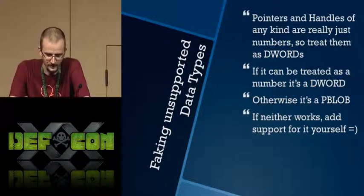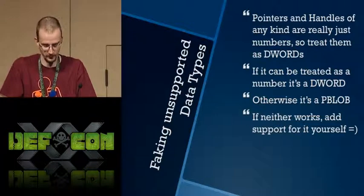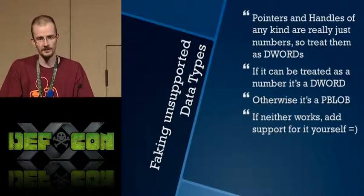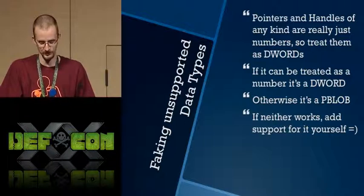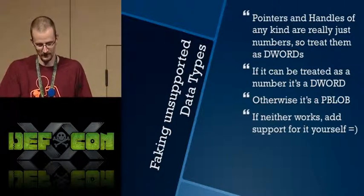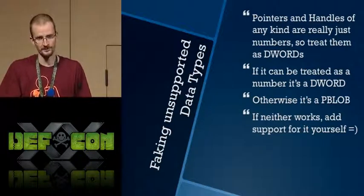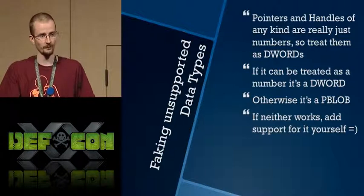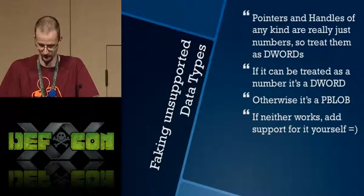Sometimes we have to fake it. There are a lot of crazy data types in the Windows API — custom structures, handles, and pointers that Ruby doesn't have a concept of. Anything that basically boils down to being a number, you just treat as a DWORD. Otherwise it's a blob. If neither really works for your scenario, my recommendation is to add support for it yourself. It seems intimidating at first, but it's actually really easy to work with this stuff.